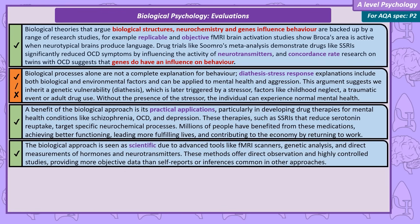The biological approach is also regarded as highly scientific. The biological tools used include fMRI scanners, genetic analysis, and direct measurements of biological substances like hormones and neurotransmitter levels. This direct observation, combined with highly controlled research studies, is more objective than relying on self-report methods or inferences used by other psychological approaches. This means we tend to have more confidence in the reliability of biological findings.